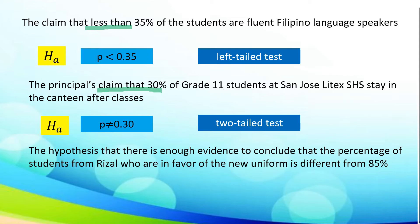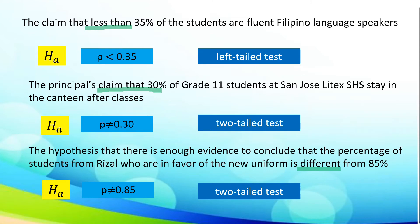The last statement: the hypothesis that there is enough evidence to conclude that the percentage of students from Rizal who are in favor of the new uniform is different from 85%. The keyword different falls under P is not equal to 0.85, which falls under two-tailed test.